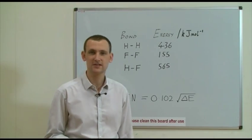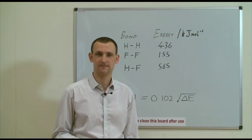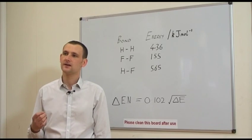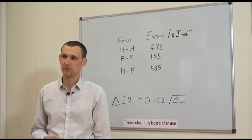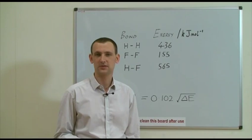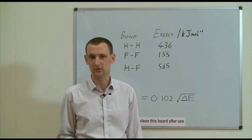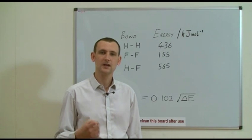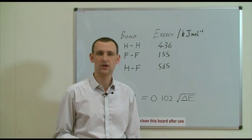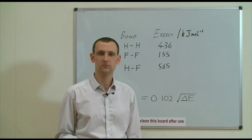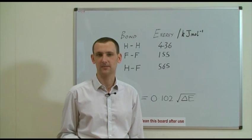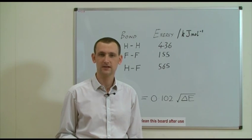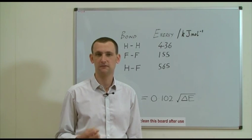Pauling devised electronegativity as a measure of this. As this is not a fundamental atomic property, but a property of atoms in molecules, he was able to derive an arbitrary scale which was unitless, with the most electronegative element, fluorine, taking a value of 4.